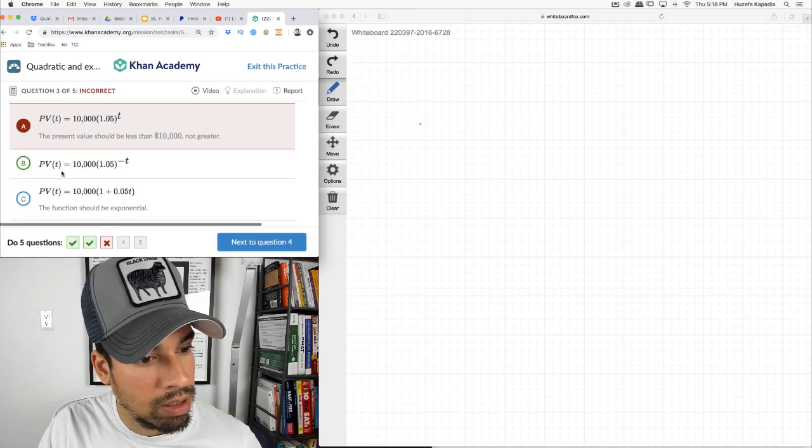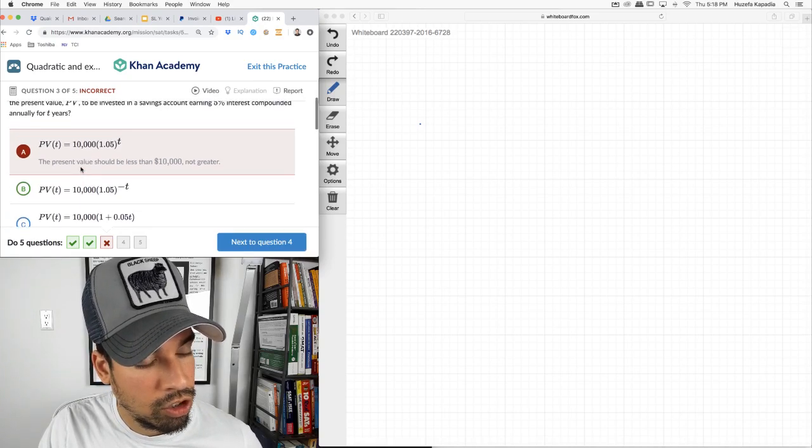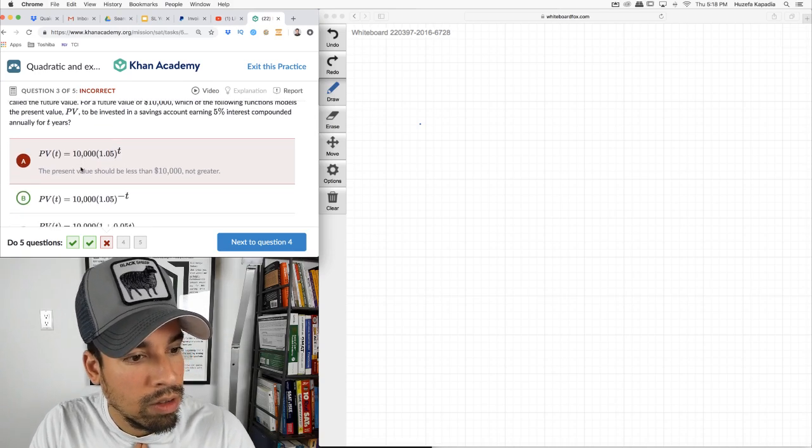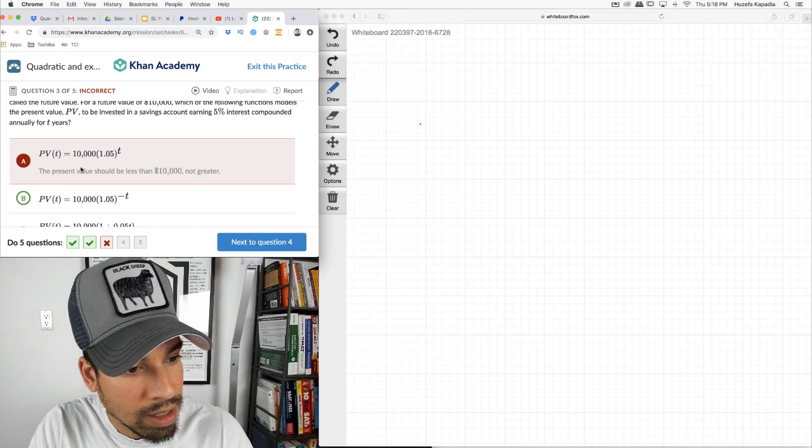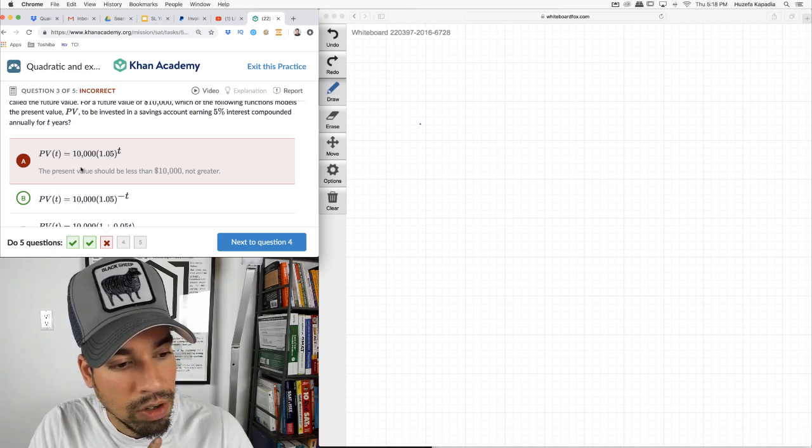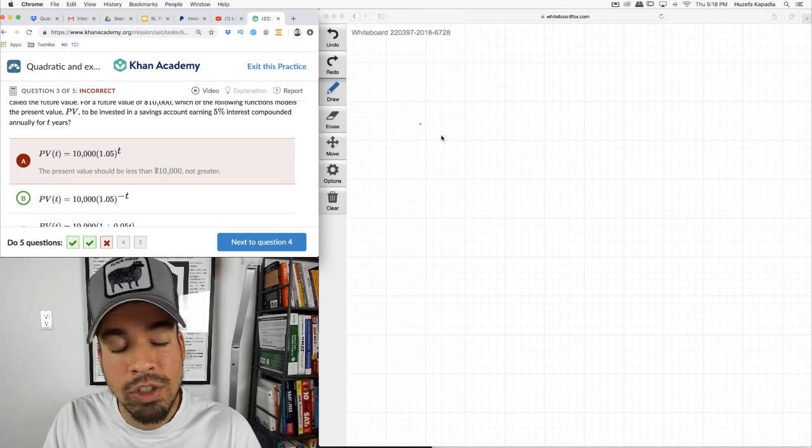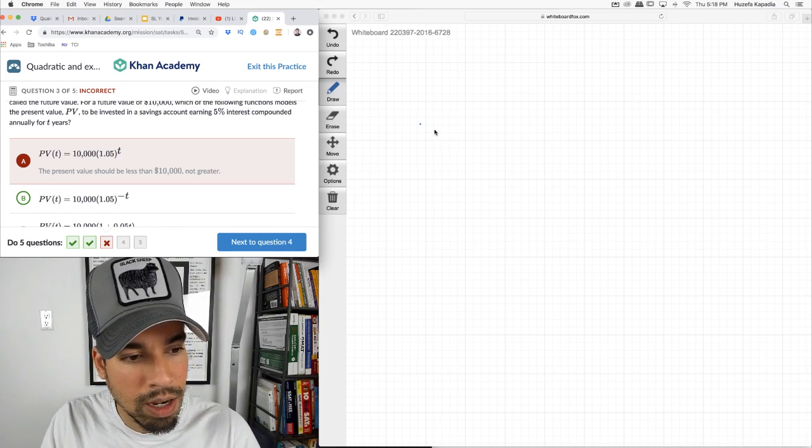Oh, no. It's this one. Shoot. Yeah. That seemed like I was kind of confused. Let's make sure. Present value should be less than 10,000, not greater. So I did get it backwards. Here's why. So I was thinking it was like, future value equals present value.